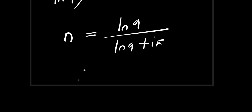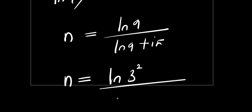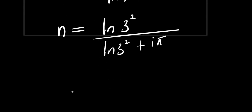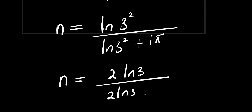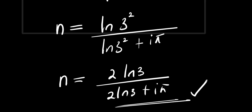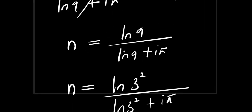So from here, we have n equals ln 9 over ln 9 plus i times pi. Remember, ln 9 can be written as ln of 3 squared, which is 2 ln 3. So n equals 2 ln 3 divided by 2 ln 3 plus i times pi. This is our answer based on this method.